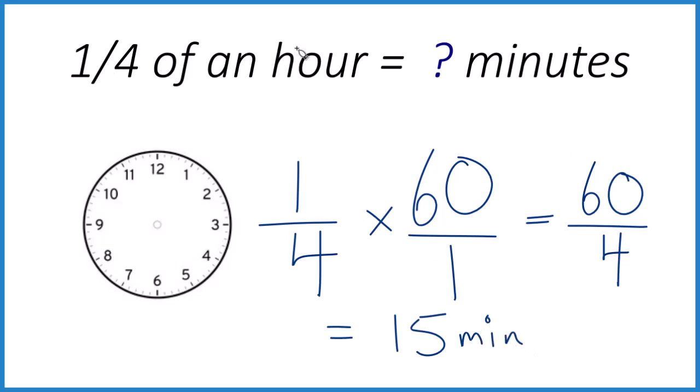That tells you that one-fourth of an hour equals 15 minutes. You can check that. 4 times 15, that's 60. So we know we did that right. So if we come to our clock, 5, 10, 15, right here, that's one-fourth of an hour.